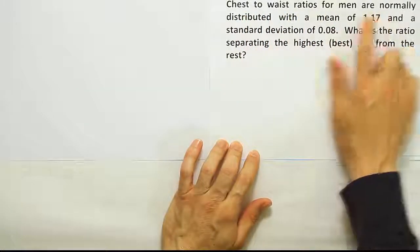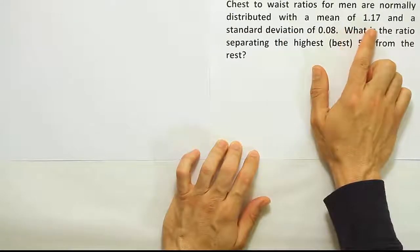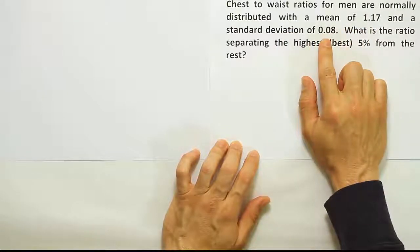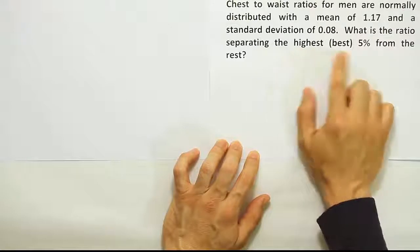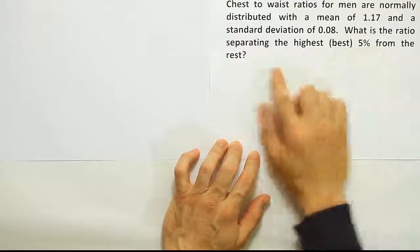Chest to waist ratios for men are normally distributed with a mean of 1.17 and a standard deviation of 0.08. What is the ratio separating the highest (best) 5% from the rest?